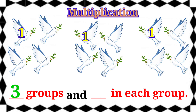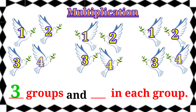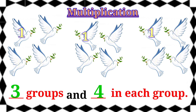Now we are going to count how many in each group. 1, 2, 3, 4. Here 4 in each group. Therefore, the answer is 3 groups and 4 in each group.